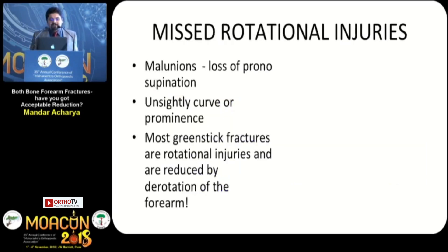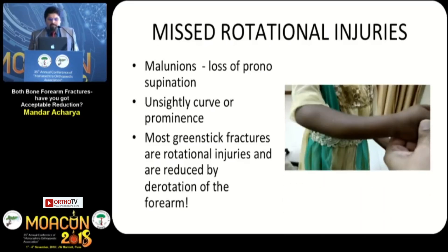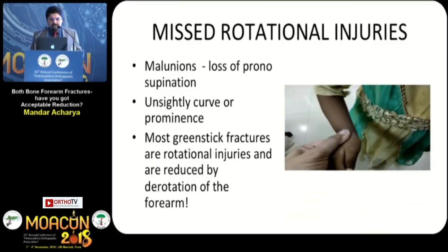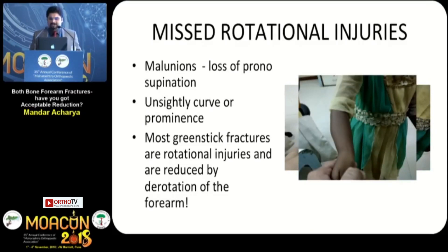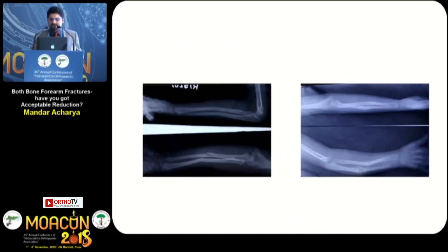Another problem with these fractures is missed rotational injuries leading to mal-unions, which causes loss of pronosupination. You can see the unsightly curve or prominence, which is more common in greenstick fractures. Rotational injuries are reduced by derotation of the forearm. You can see there is restriction of pronation and supination in this child.